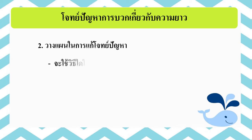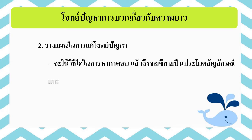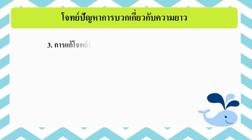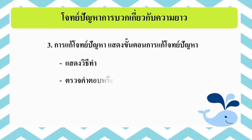จะใช้วิธีใดในการหาคำตอบ แล้วจึงจะเขียนเป็นประโยคสัญลักษณ์ และคิดหาคำตอบ ต่อมาขั้นที่ 3 การแก้โจทย์ปัญหา แสดงขั้นตอนการแก้โจทย์ปัญหา ได้แก่ 1. แสดงวิธีทำ 2. ตรวจคำตอบ หรือตรวจสอบความสมเหตุสมผลของคำตอบ ตอนนี้เราได้ทราบแล้วว่าการแก้โจทย์ปัญหามีขั้นตอนอย่างไรบ้าง ต่อมาคุณน้องจะพาเด็กๆไปดูตัวอย่างในการแก้โจทย์ปัญหากันค่ะ เด็กๆพร้อมหรือยังคะ ถ้าพร้อมแล้ว เราไปดูตัวอย่างไปพร้อมๆกันเลยนะคะ